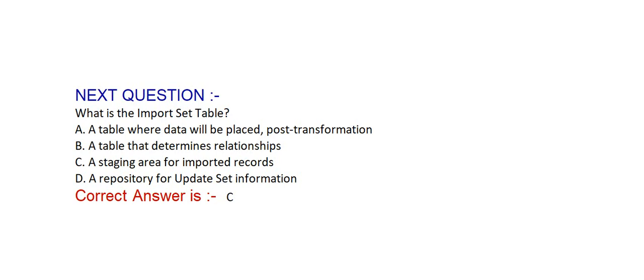Question: What is the import set table? Option A: a table where data will be placed post transformation. Option B: a table that determines relationships. Option C: a staging area for imported records. Option D: a repository for updated set information. Correct answer is Option C, a staging area for imported records.